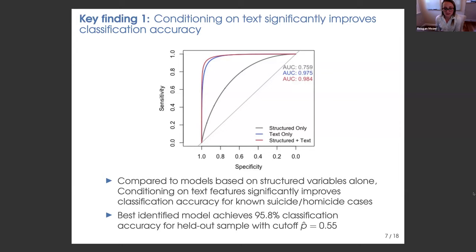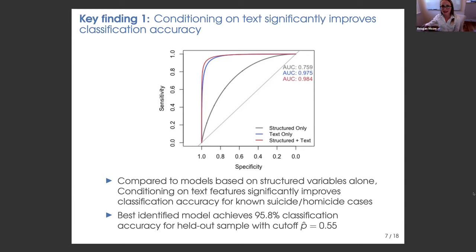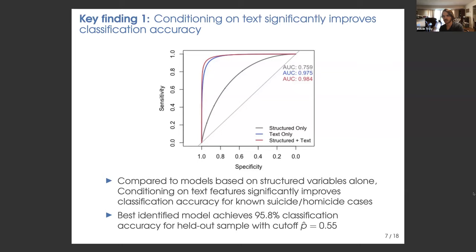We get around 96% classification accuracy for the model using both structured and text-based covariates on the testing data, with an optimal threshold for identifying suicide around 0.55. A question was raised about whether that accuracy is driven by text saying 'there was a suicide note.' We eliminated any keywords that would indicate a definite suicide, since those should always get labeled as suicide and won't show up in undetermined cases. We screened for and removed a set of such terms and phrases before generating text features, though the cases with notes were included in the training sample.